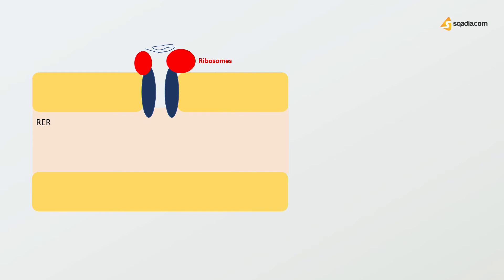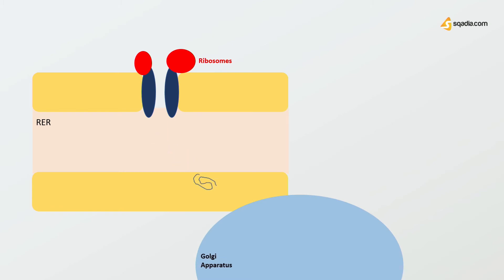How are these receptors synthesized? Just like insulin, pro-receptors are synthesized in the rough endoplasmic reticulum. The pro-receptor is cleaved to form mature alpha and beta subunits, and a heterodimer is formed linked by disulfide (SS) bonds.